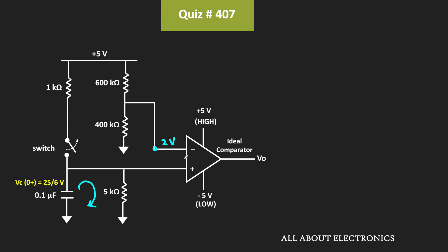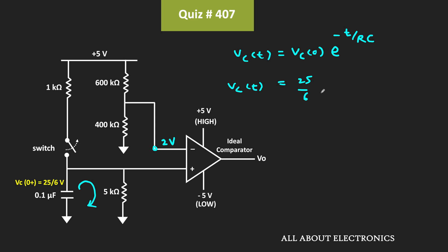We need to find the time t at which the output of this comparator goes low. The voltage across the capacitor is given by the discharge equation: VC = (25/6) × e^(−t/RC). At t = 0 the voltage is 25/6 V, and at t = infinity it will be 0V. At some time t1, the voltage across the capacitor becomes 2V — that is the moment we need to find, because that is when the transition in the comparator output occurs.